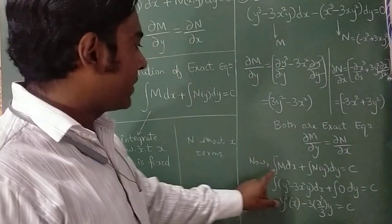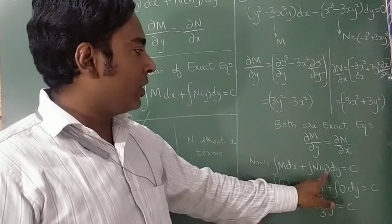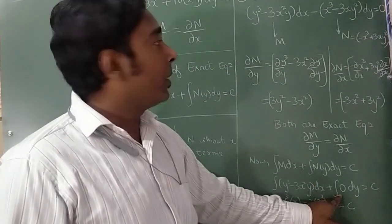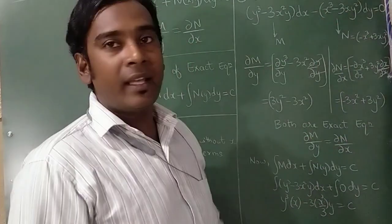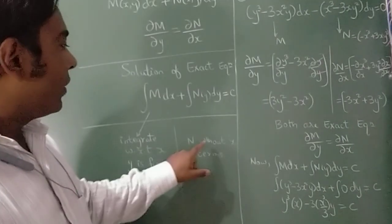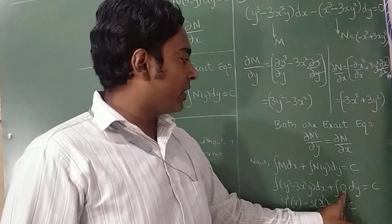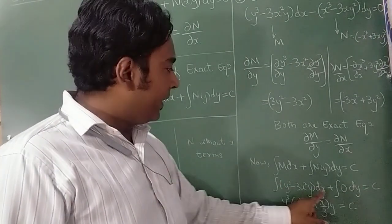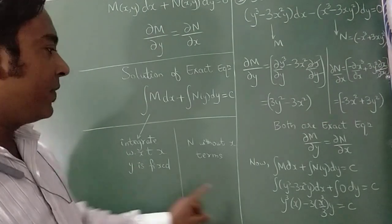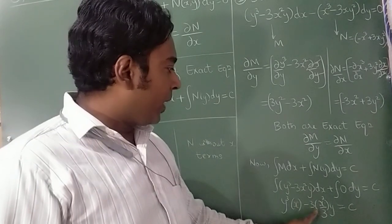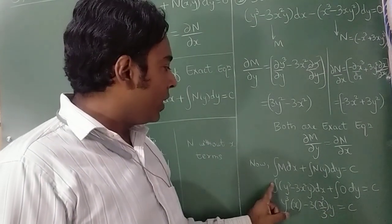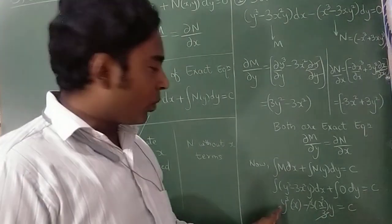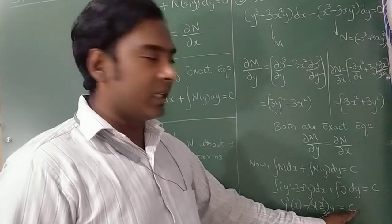The solution for the exact equation is integration of M dx plus integration of N (y-only terms) dy = C. All terms in N contain x, so I write zero for that part. Integrating M with y fixed: integration of y³ dx = xy³, integration of -3x²y dx = -x³y (the 3s cancel). Final answer: y³x - x³y = C.